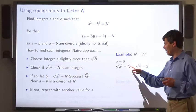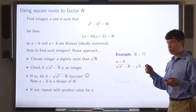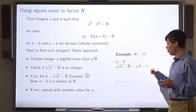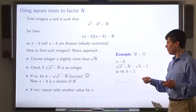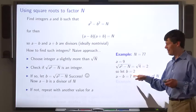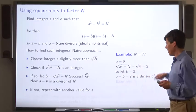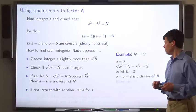We try a equals 9. A squared minus n is a perfect square. Its square root is 2. So we let b equal 2. And now a minus b is 7, that is a divisor of n. So we've successfully factored n using this approach.